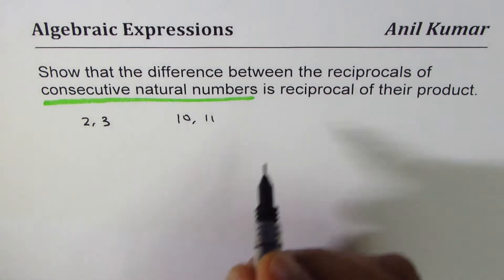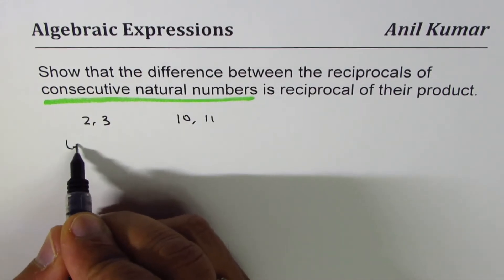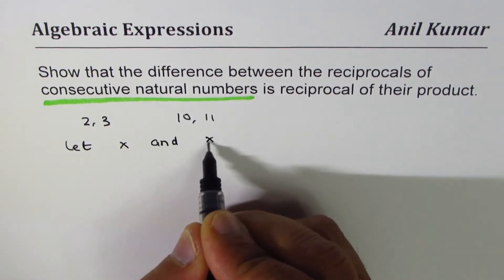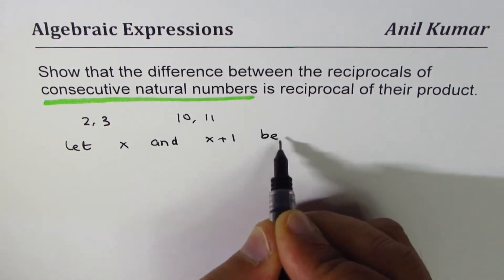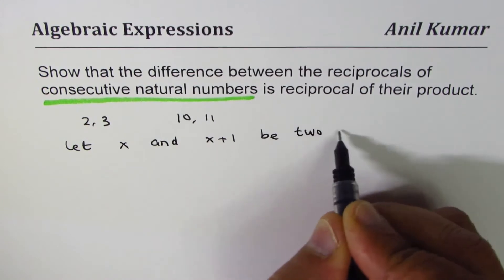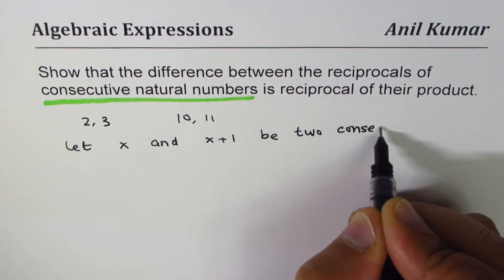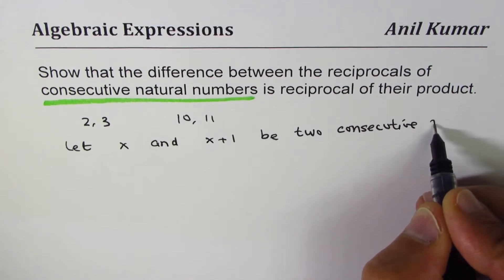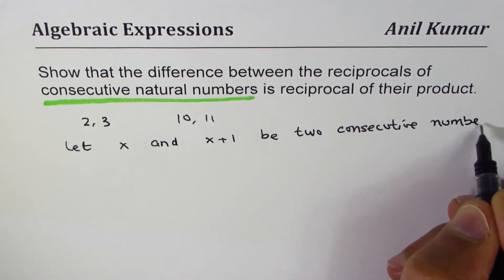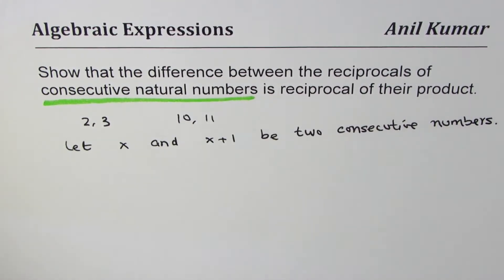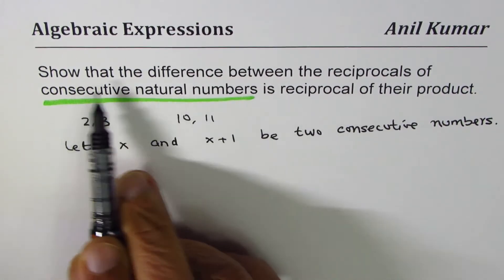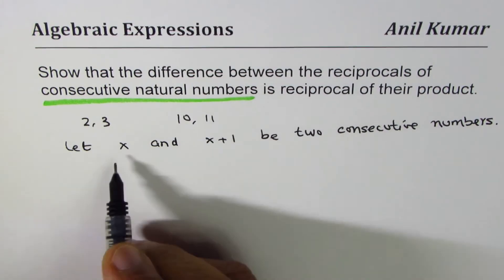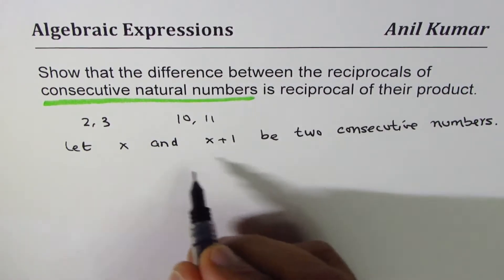Generally, we say: let X and X plus 1 be two consecutive natural numbers. Now the question asks us to show the difference between their reciprocals.